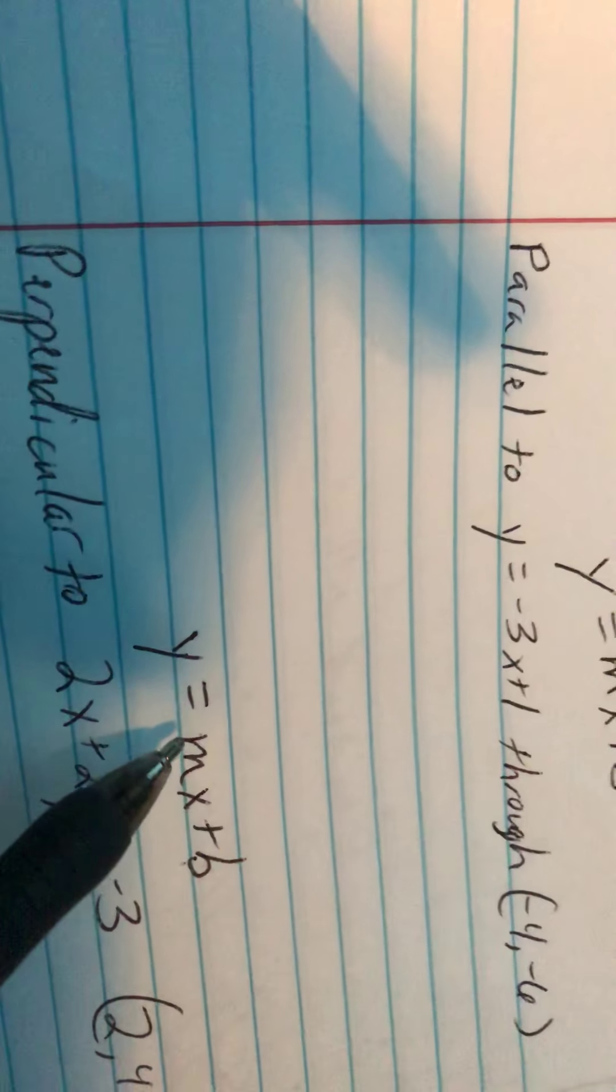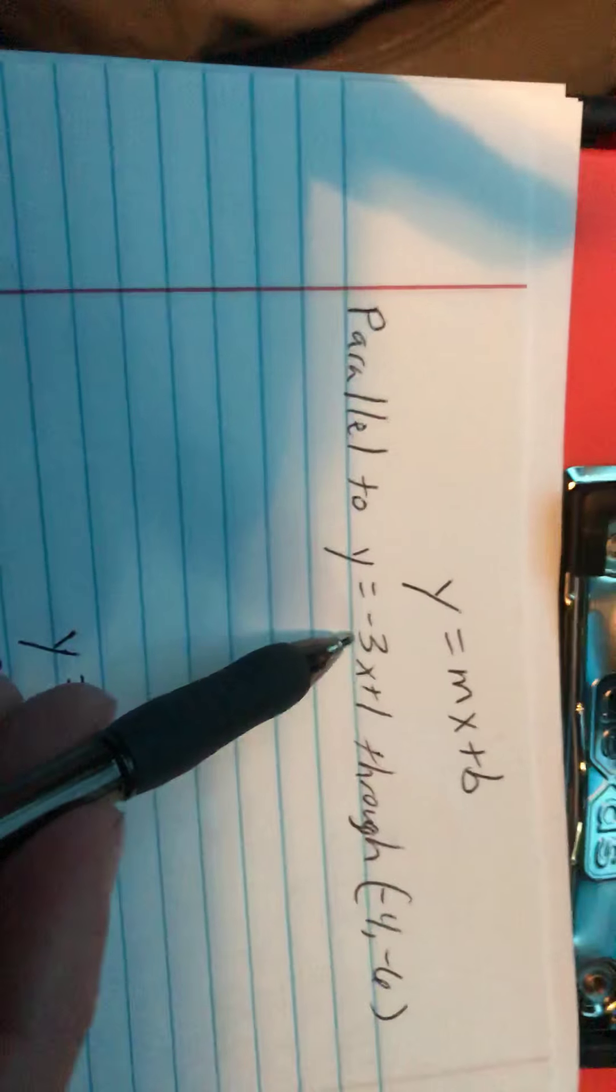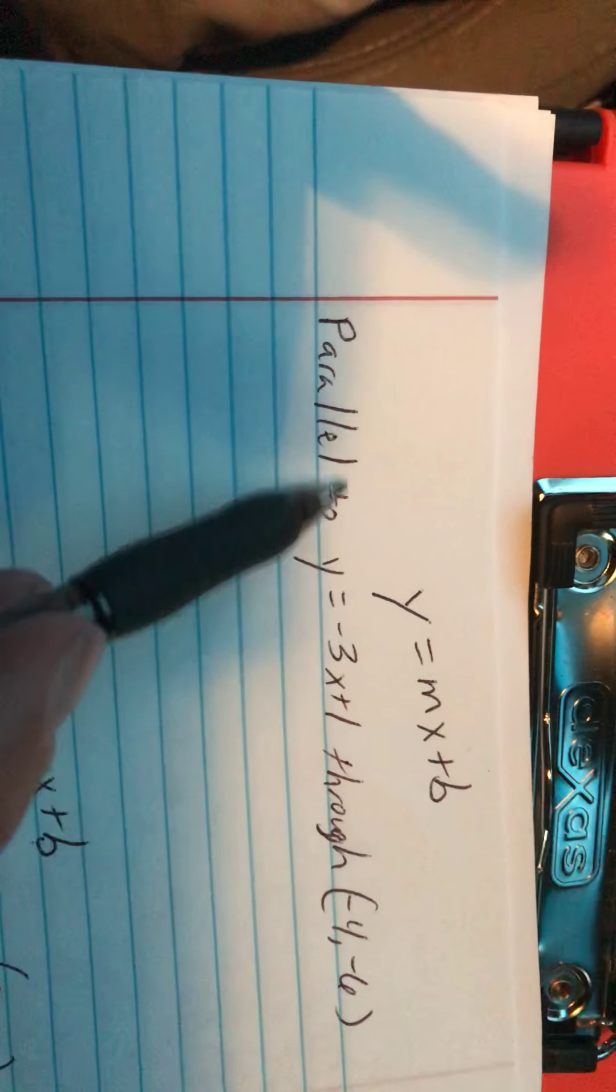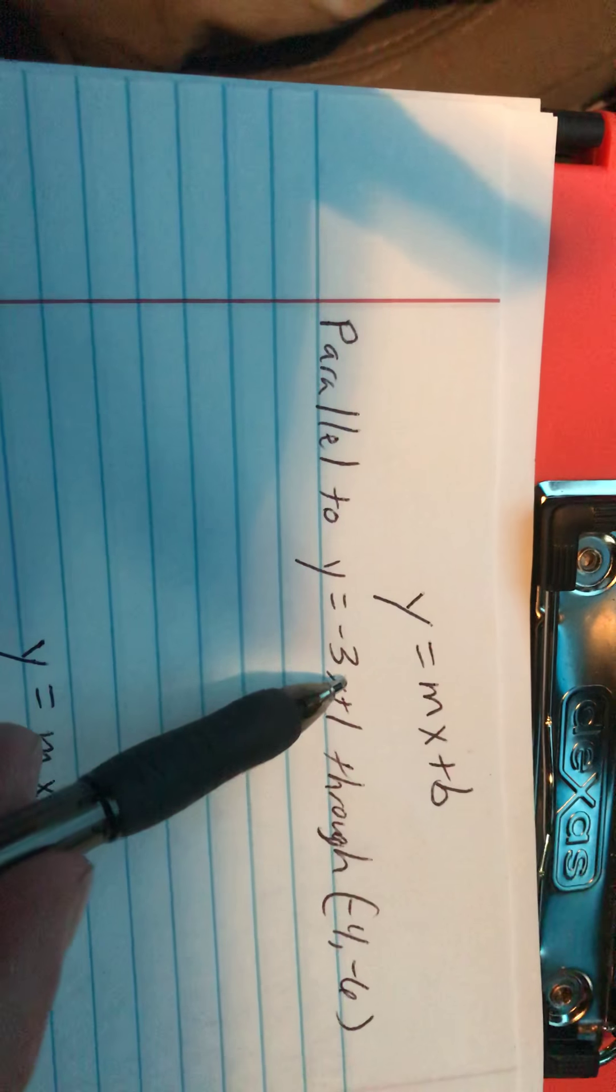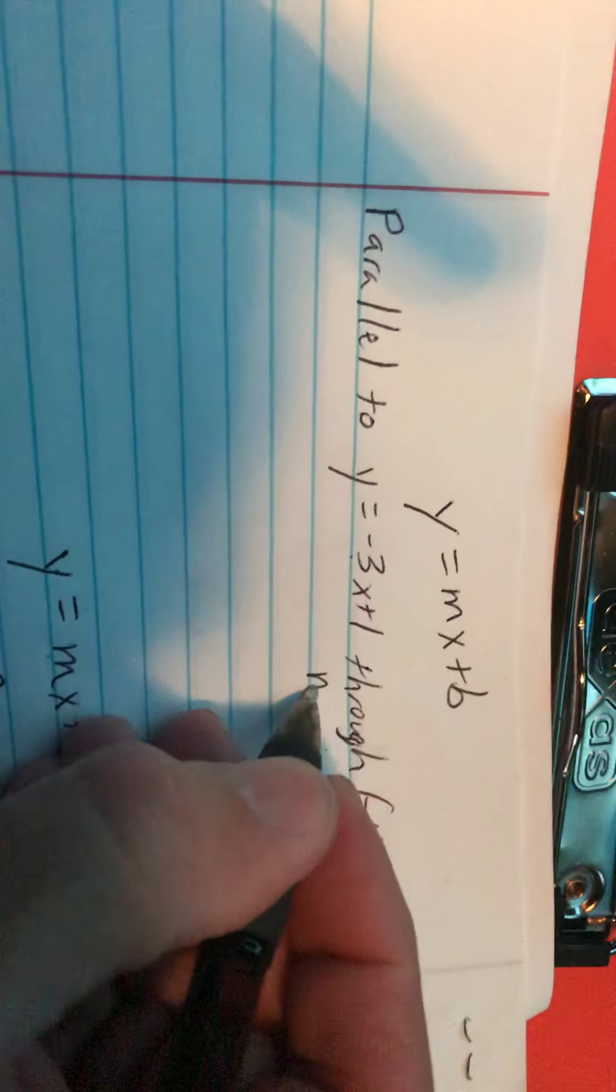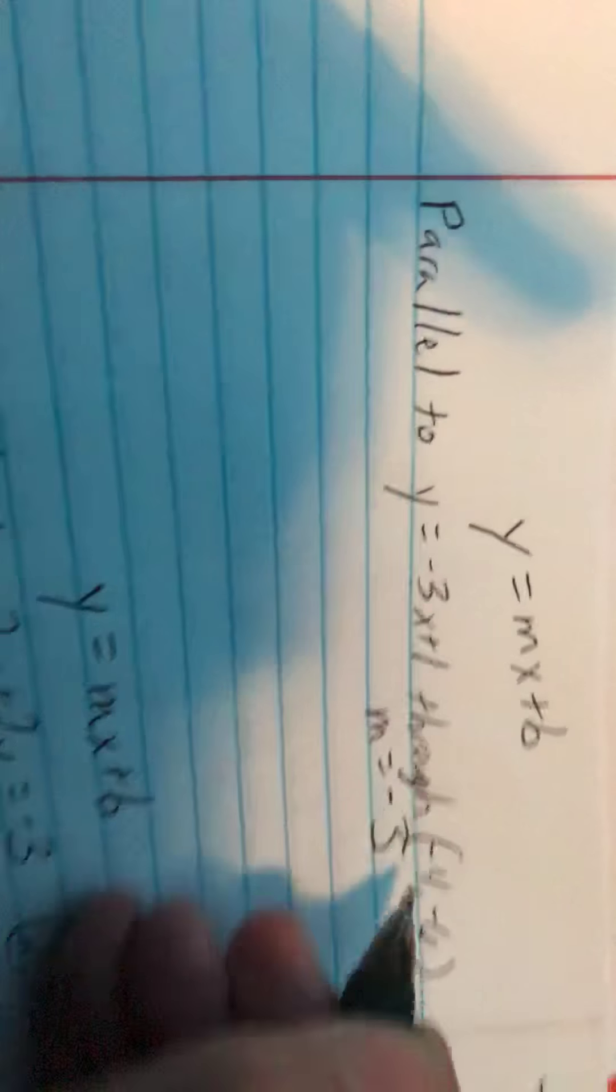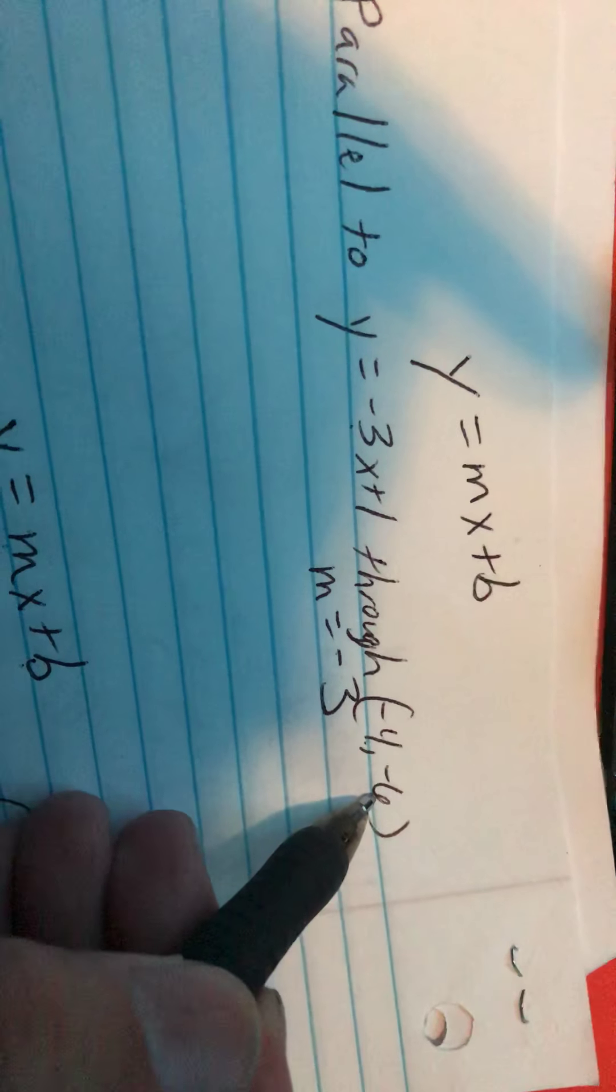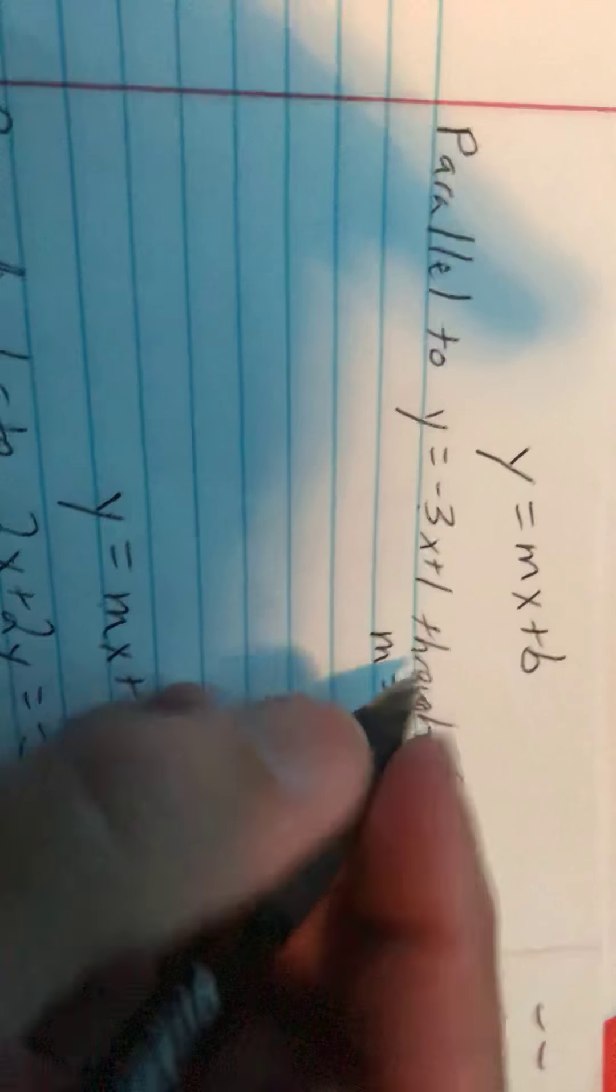The way that we do that, we first determine the slope by looking here. Again, I apologize about the light. So we look at the slope of the line that's parallel to this line. The slope of this line is going to be negative 3, so go ahead and write down m equals negative 3. This is going to be our x and this is going to be our y. I'm just going to write x and y so we can go ahead and put our negative 3 in here for m.